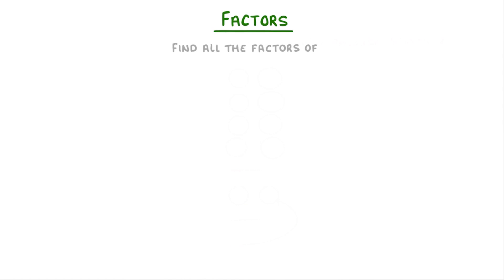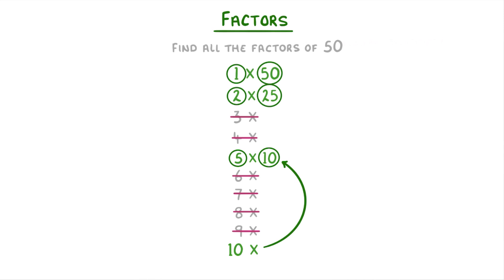So to find all the factors of 50, we do 1 times 50, 2 times 25. 3 doesn't go into 50, 4 also doesn't work, 5 times 10. 6, 7, 8, and 9 don't work, and then we're at 10 which we've already done. So the factors are just 1, 2, 5, 10, 25, and 50.